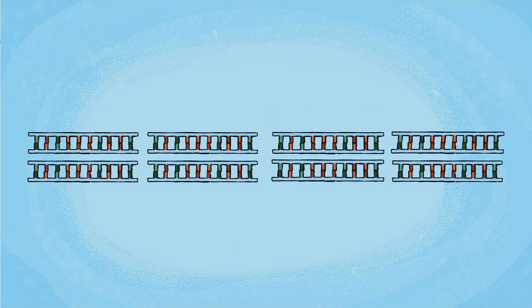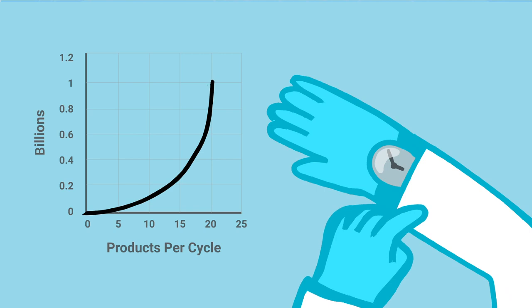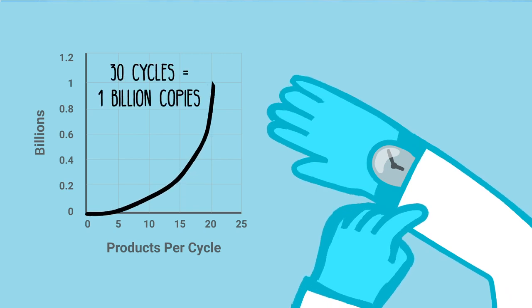As the number of cycles increases, theoretically the number of DNA molecules increases exponentially, so that after 30 cycles, more than 1 billion DNA molecules will have been generated in a few hours.